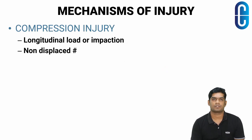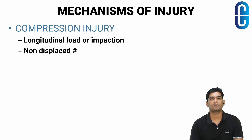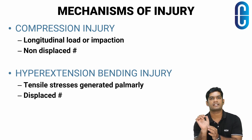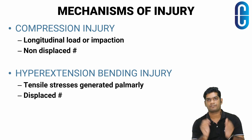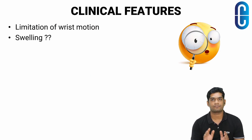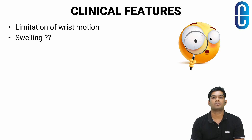There are two possible mechanisms of injury. The first is a compression injury which results in a more longitudinal load or impaction of the wrist, resulting in a non-displaced fracture. The second mechanism is a hyperextension bending injury where tensile forces are generated palmarly, resulting in a displaced fracture. A high index of suspicion is required so that you don't miss a scaphoid fracture in the ER, because there will not be dramatic limitation of movement or significant swelling.